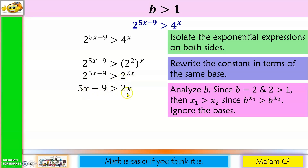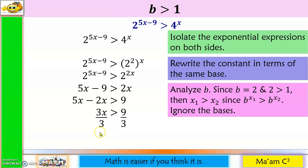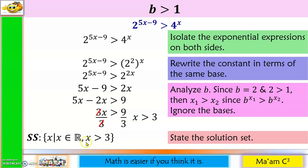Let us solve for x. Let us move 2x together with 5x, and negative 9 to the other side. 5x minus 2x is 3x, so divide both sides by 3 — the 3s cancel out, and 9 divided by 3 is 3 — so x is greater than 3. The solution set is x greater than 3, and in interval notation that is 3 to positive infinity, because values of x greater than 3 go from 3 to the right.